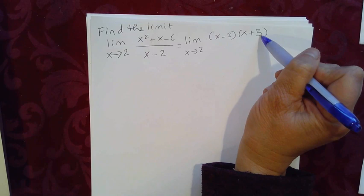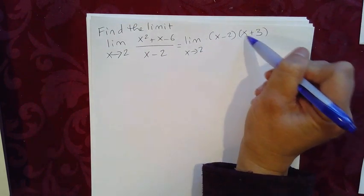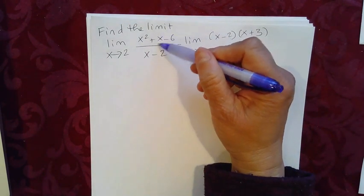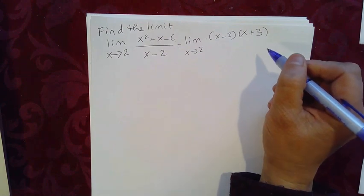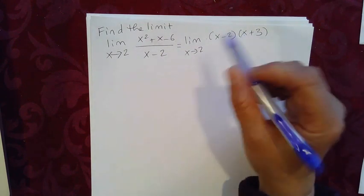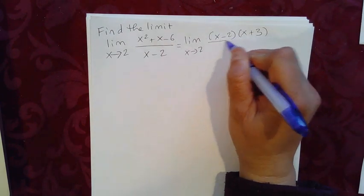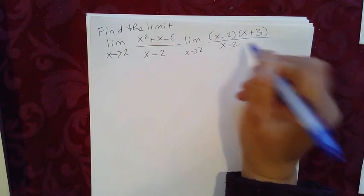So yes, negative 2 times 3 is negative 6, and negative 2x plus 3x, that gives me positive x. And that's what we have in the middle term, and x times x is, of course, x squared. So a little bit of algebra review.